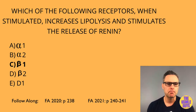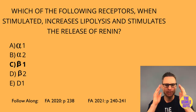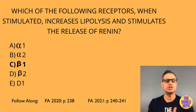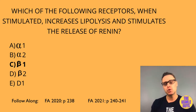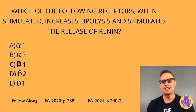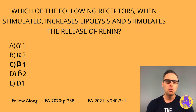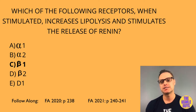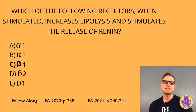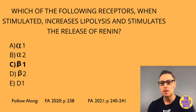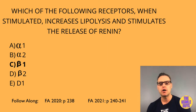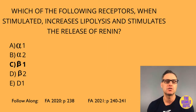The correct answer here is C, beta-1. Let's do a quick review of GQ, GI, and GS G proteins. GQ stimulates phospholipase C, which hydrolyzes PIP2 into diacylglycerol and IP3. IP3 acts as a second messenger to release stored calcium into the cytoplasm, while DAG activates protein kinase C. The GS subunit binds adenylyl cyclase to produce cyclic AMP, which activates PKA and leads to phosphorylation of various proteins.